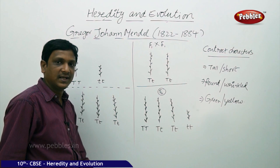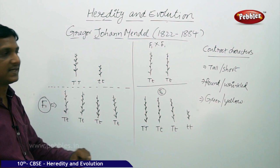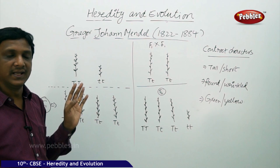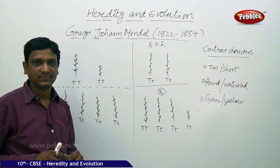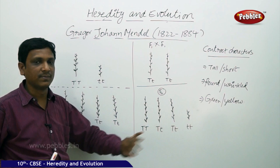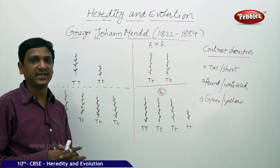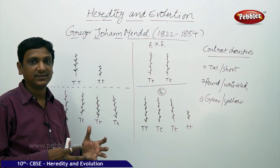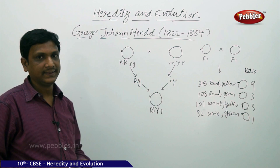Mendel conducted some more experiments. In the first case he considered only one contrasting character — tall or short. In the next experiment, he took two different contrasting characters: tallness and shortness together with round and wrinkled seeds. Let us now see the rules of inheritance by taking two contrasting characters.